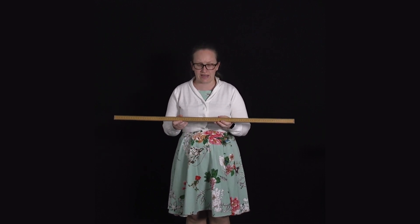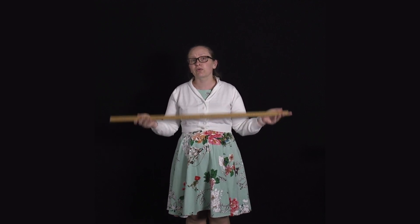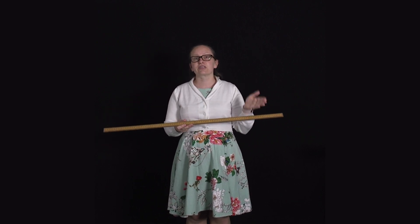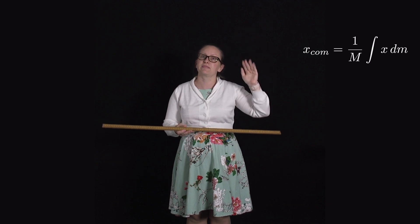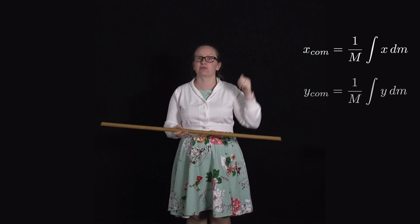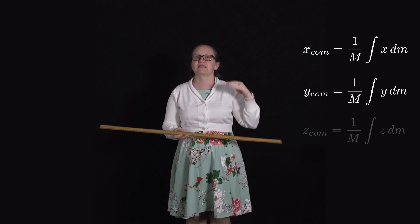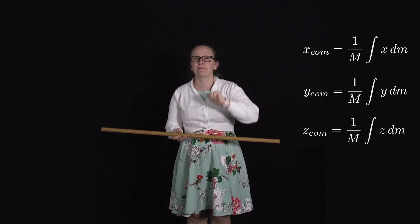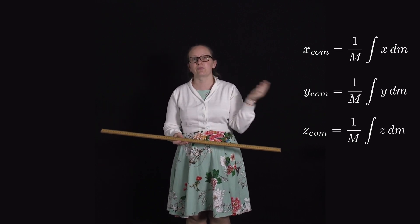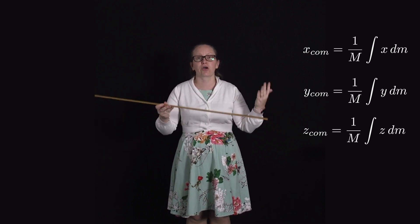We've seen how to calculate the centre of mass for one-dimensional continuous objects. For two- or three-dimensional continuous objects we use exactly the same method: the x-coordinate of the centre of mass is 1 over M times the integral of x dm; the y-coordinate is 1 over M times the integral of y dm; and the z-coordinate is 1 over M times the integral of z dm. We consider each dimension separately and then combine the coordinates.